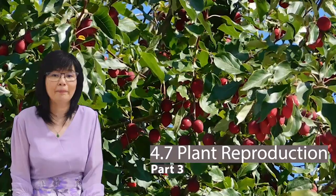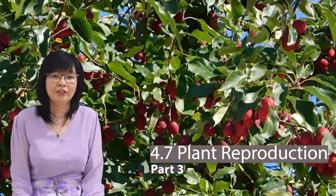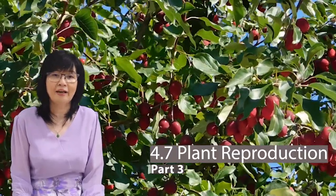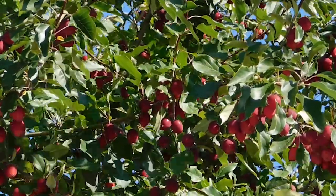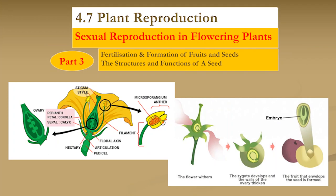Today we are going to learn about the fertilization process in flowering plants and the structures of a seed and their functions. You have learned that pollination is the transferring of pollen grains from the anther to the stigma. Let's find out what happens after pollination.